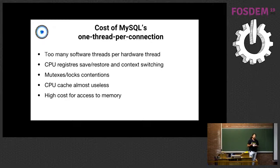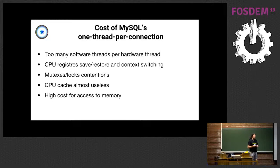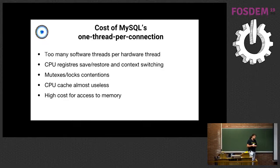Basically you have a lot of software threads while the number of physical threads in the CPU are way less. So you have a lot of context switching because the CPU every time has to switch from one software thread to another one. You have mutex and contention between all those threads, and the CPU cache most of the time is absolutely useless because all the context has been moved in and out. Access to memory is way more expensive than accessing the cache in the CPU.